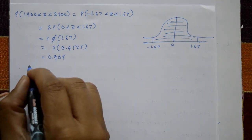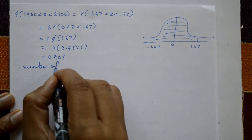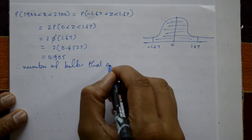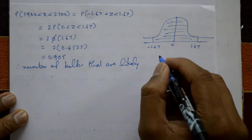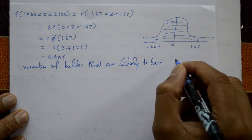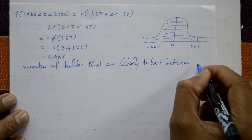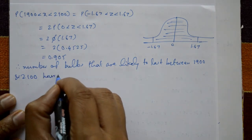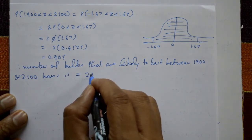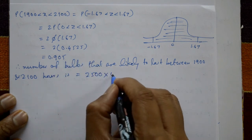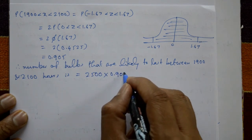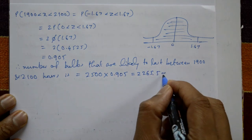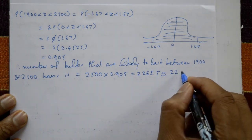We need to calculate for 2500 bulbs. The number of bulbs likely to last between 1900 and 2100 hours = 2500 × 0.905 = 2262.5, approximately 2263 bulbs. This is the required solution.